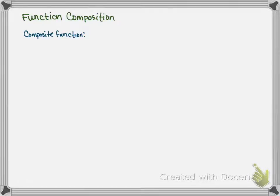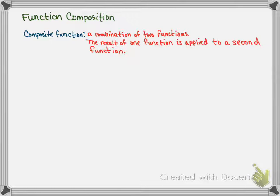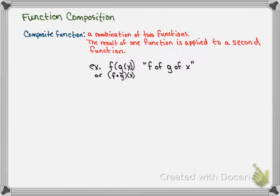Function composition. A composite function is a combination of two functions where the result of one function is applied to a second function. So for example, we could write this as f of g of x — there's no multiplication implied here by the parentheses. Another notation for this is f-circle-g of x, where the circle is an open circle between the f and the g. These two notations refer to the same composition.